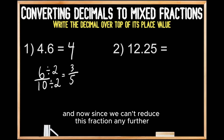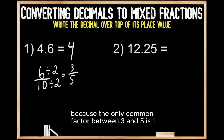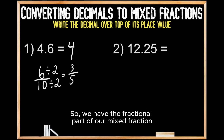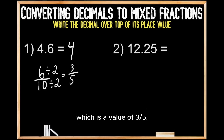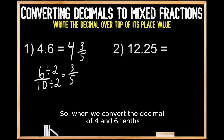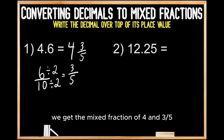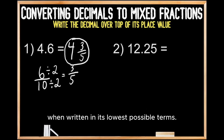Since we can't reduce this fraction any further — the only common factor between 3 and 5 is 1 — we're done. The fractional part of our mixed fraction is 3 fifths. So when we convert the decimal of 4 and 6 tenths into a mixed fraction, we get 4 and 3 fifths in its lowest possible terms.